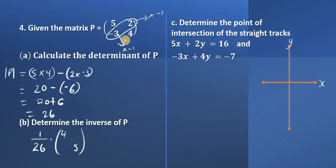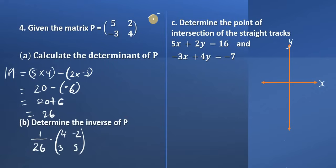We do not switch the non-leading diagonal elements — we just multiply them by negative 1. So the 2 becomes a negative 2, and negative 3 becomes a positive 3. The signs change when we multiply by negative 1. Always switch the leading diagonal elements, always change the signs of the non-leading diagonal elements but keep them in their position — do not switch. And outside we have to have 1 divided by the determinant.